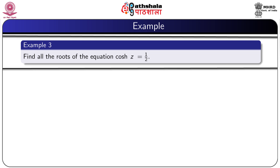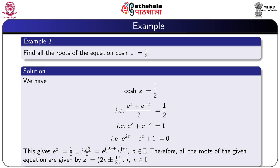Example 3: Find all the roots of the equation cosh z = 1/2. Using cosh z = (e^z + e^(-z)) / 2, putting this value and simplifying, we obtain e^(2z) - e^z + 1 = 0, which gives e^z = (1/2) ± i(√3/2) = e^((2n ± 1/3)πi) where n is any integer. Therefore, all the roots are given by z = (2n ± 1/3)πi where n is any integer.